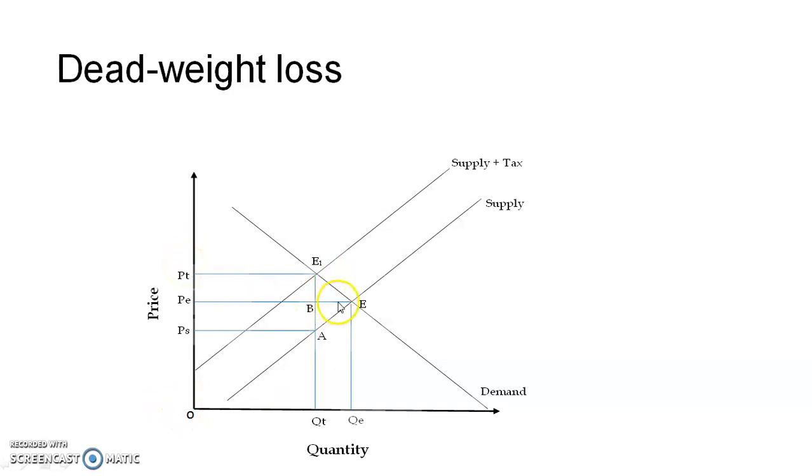So earlier the equilibrium was E. Now see, this portion, A, E, E1. This portion. This portion is called deadweight loss due to taxation. That is A, E, E1.